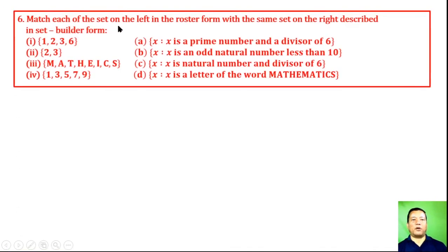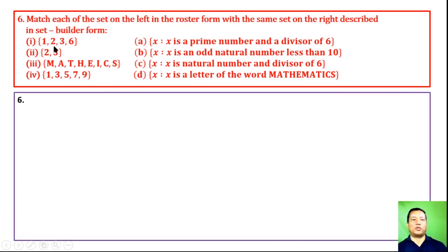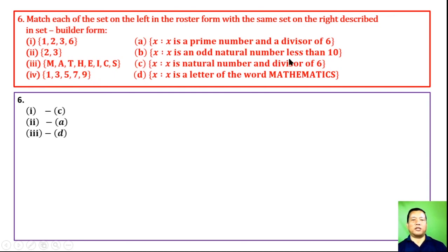Question 6: Match the sets on the left in roster form with the same sets on the right in set builder form. (i) {1, 2, 3, 6} matches with {x : x is a natural number and a divisor of 6}. (ii) {2, 3} matches with {x : x is a prime number and a divisor of 6}. (iii) The set related to 'MATHEMATICS'. (iv) {1, 3, 5, 7, 9} matches with {x : x is an odd natural number less than 10}. Thanks for watching.